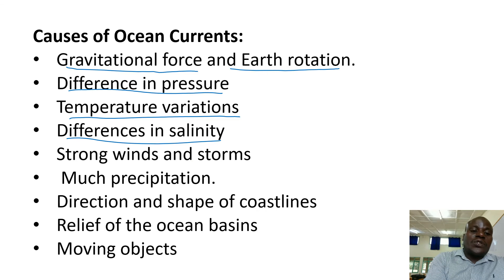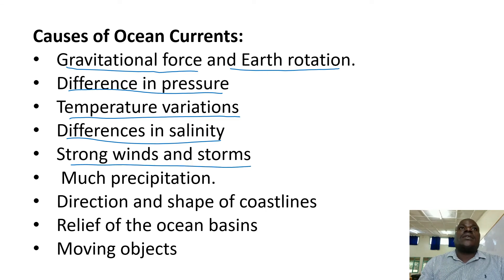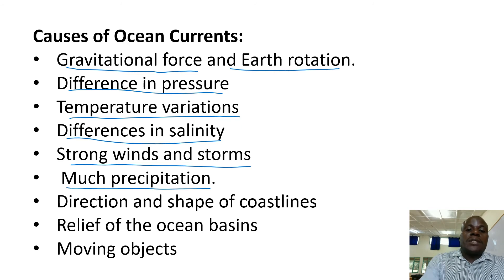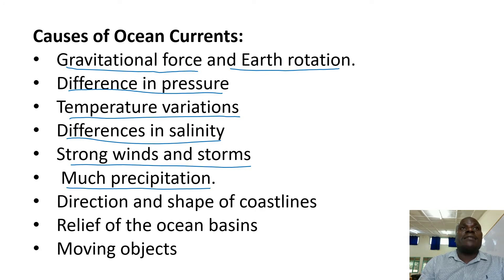Then we have strong winds and storms. These bring instabilities on oceanic water and seas and finally cause movements or ocean currents, because these winds and storms have destabilized the oceanic water. Then much precipitation — in terms of rainfall — the more the rainfall, the more the instabilities and the more the ocean currents.